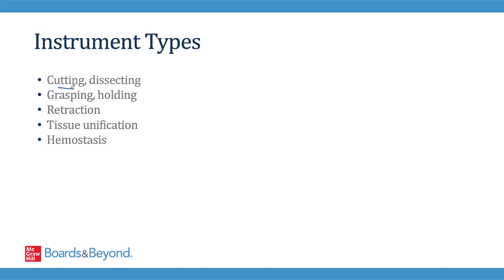Some instruments are better for cutting and dissecting tissues, while others are better for grasping and holding them. We want to make sure we can see what we're doing, so we'll often use certain retractors to move other tissues out of the way. Oftentimes in surgery, we have to remove a piece of diseased organ and put the remaining organ back together, like you would if you were taking out a piece of the intestine, and in that case we use instruments to help bring these tissues together. Finally in surgery, we like to be able to prevent and control blood loss, so there are instruments we use to help us.